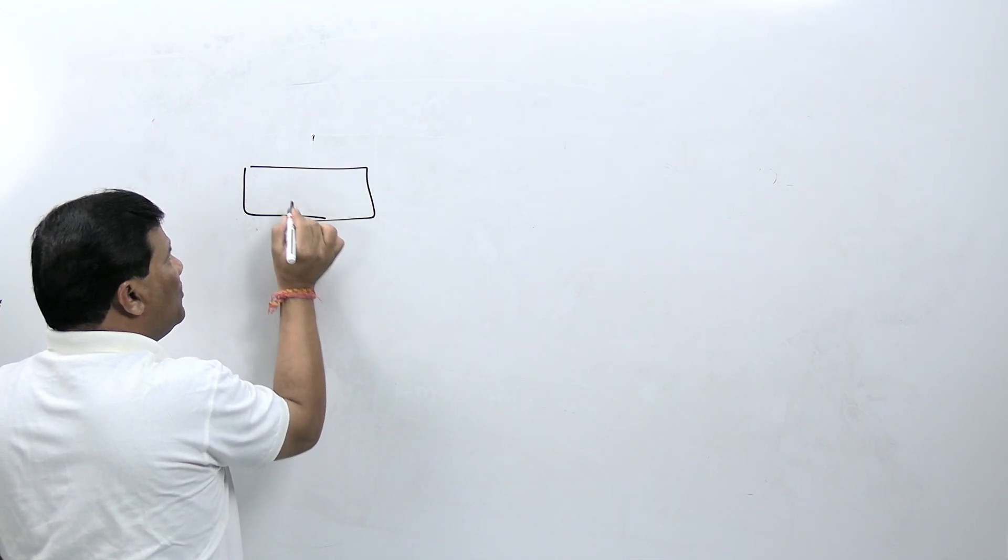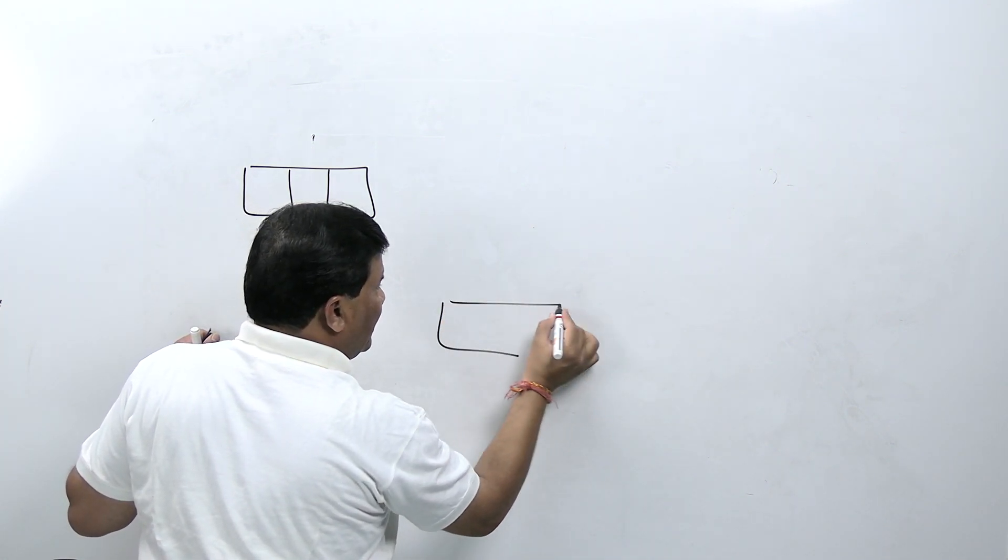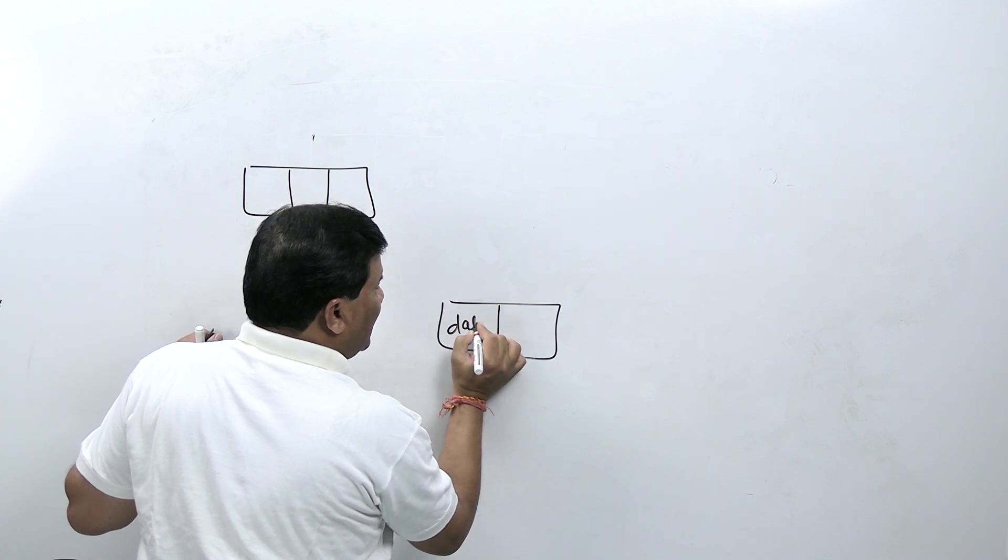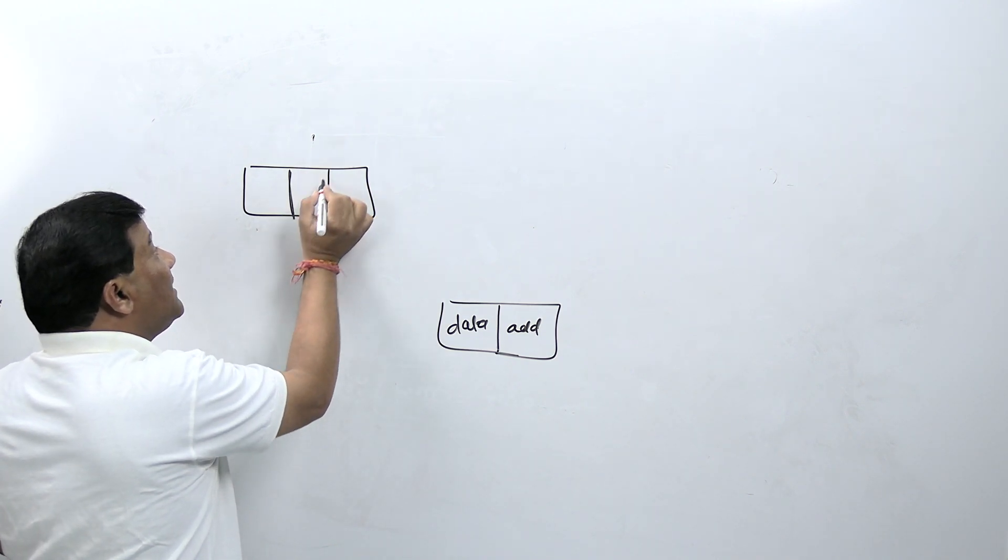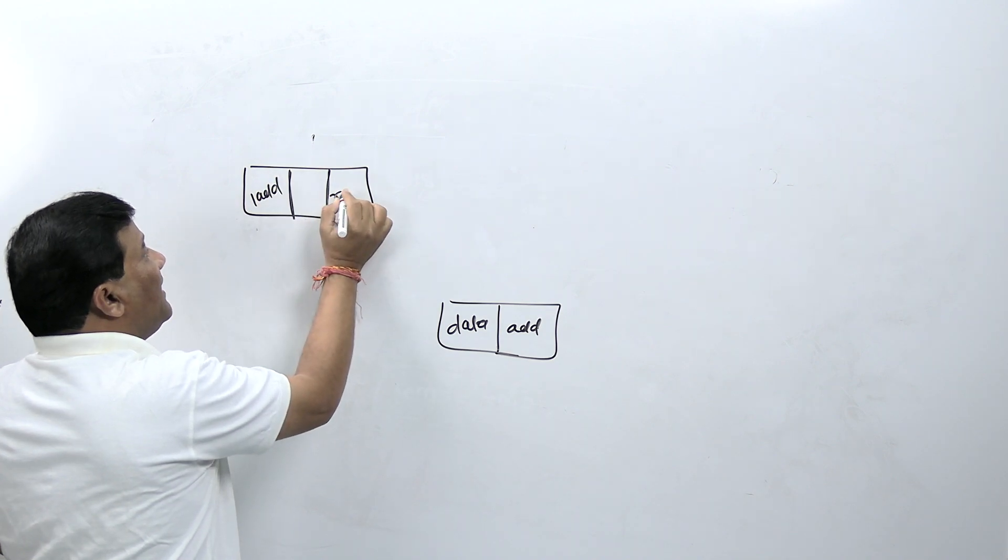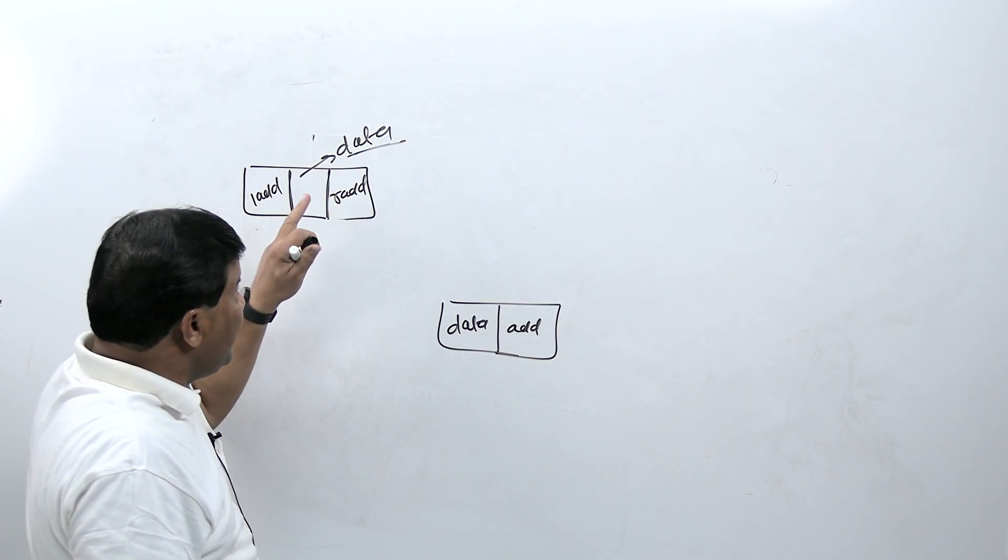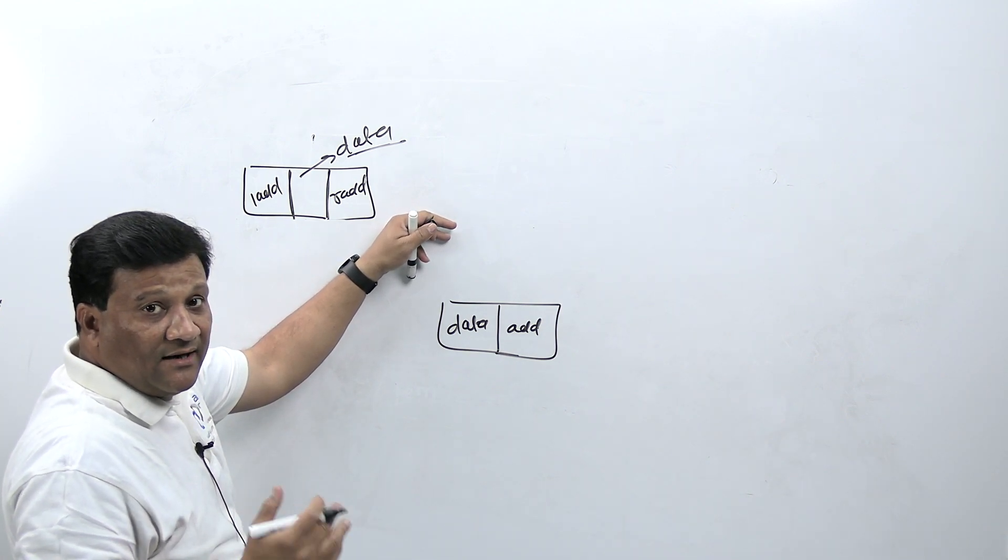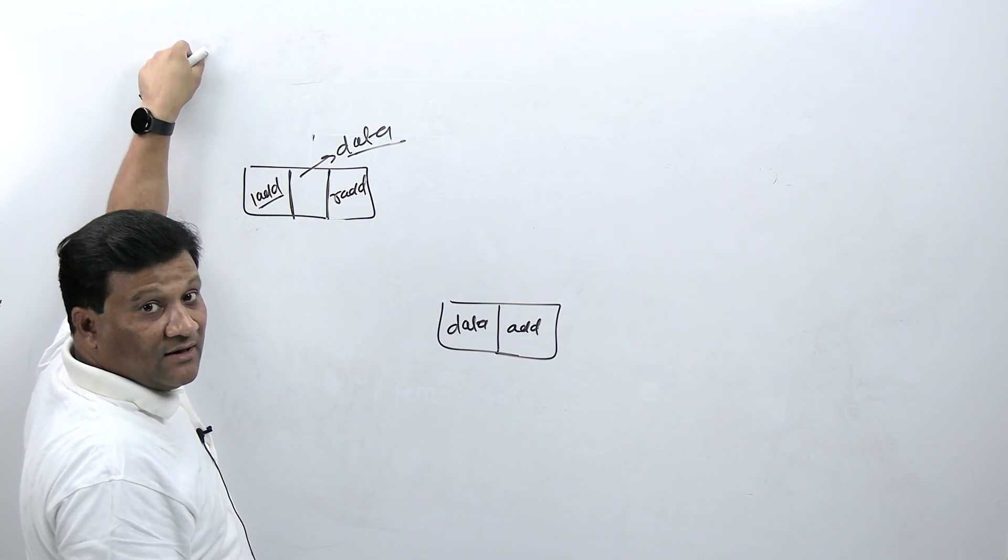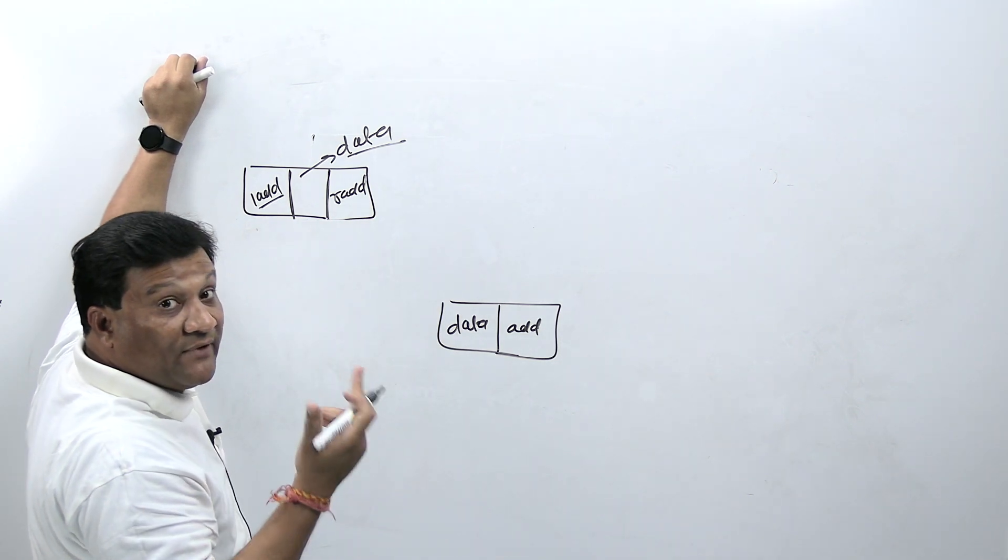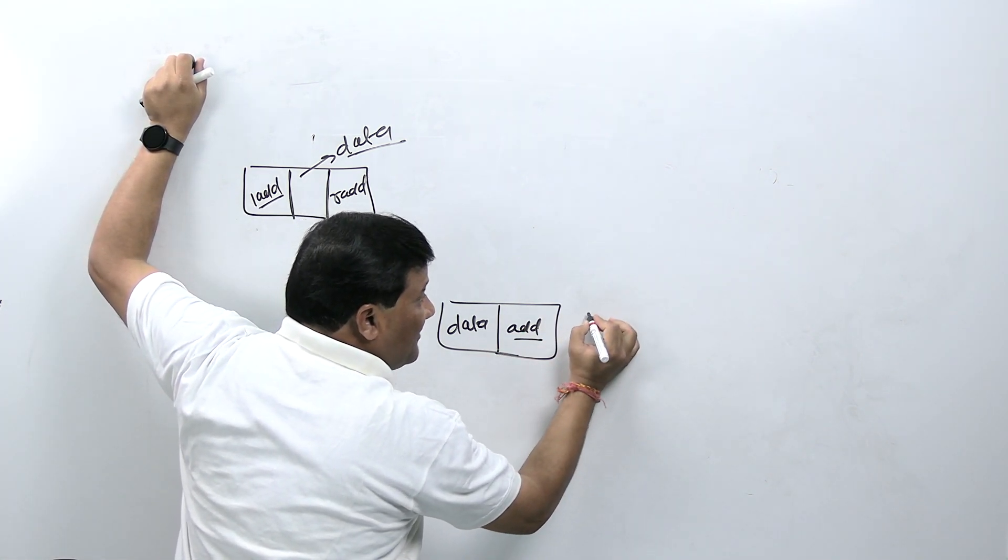In single linked list node, there are two parts: data part and address part. But in double linked list, every node has three parts: left address, right address, and data part. One is left address, second is right address, and one is data part. Left address part contains address of previous node, right address part contains address of next node, and data part contains actual data.